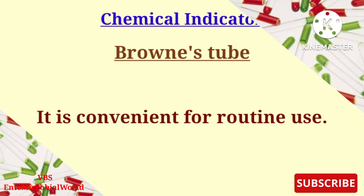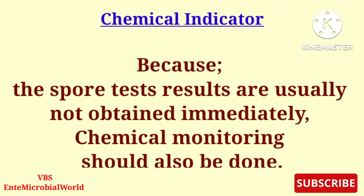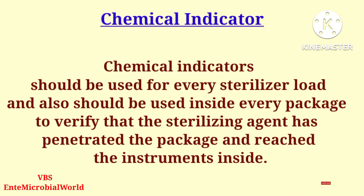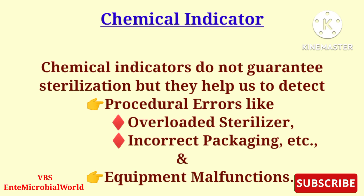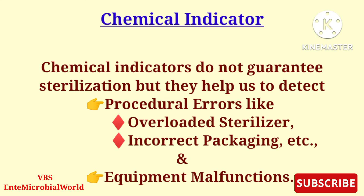Brown's tube is convenient for routine use. Because spore test results are not obtained immediately, chemical monitoring should also be done. Chemical indicators should be used for every sterilizer load and inside every package to verify that the sterilizing agent has penetrated the package and reached the instruments inside. Chemical indicators do not guarantee sterilization, but they help detect procedural errors like overloaded sterilizers, incorrect packaging, and equipment malfunctions.